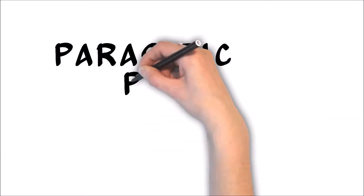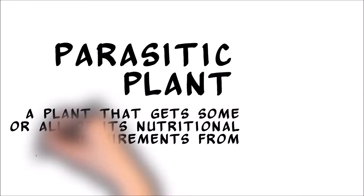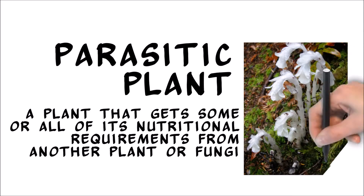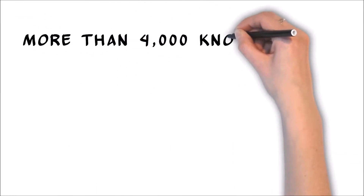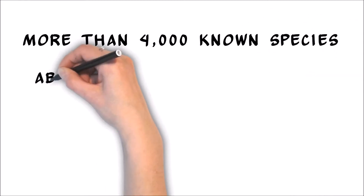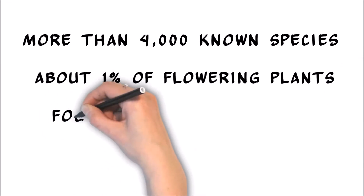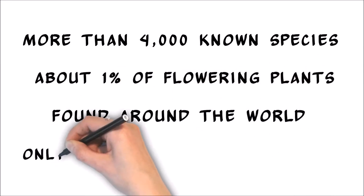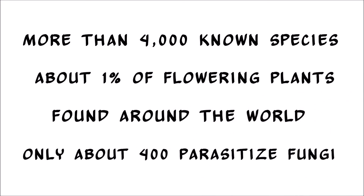For a plant to be parasitic, it must get all or at least some of its nutritional requirements from another living plant or certain fungi. There are more than 4,000 known species of parasitic plants, making up about 1% of all flowering plant species, and they can be found all over the world in almost every biome. Most of these plants parasitize other plants; only about 400 species are known to parasitize fungi.